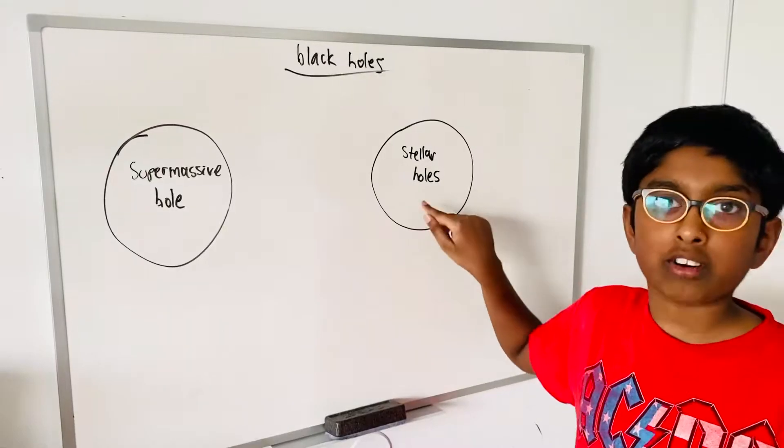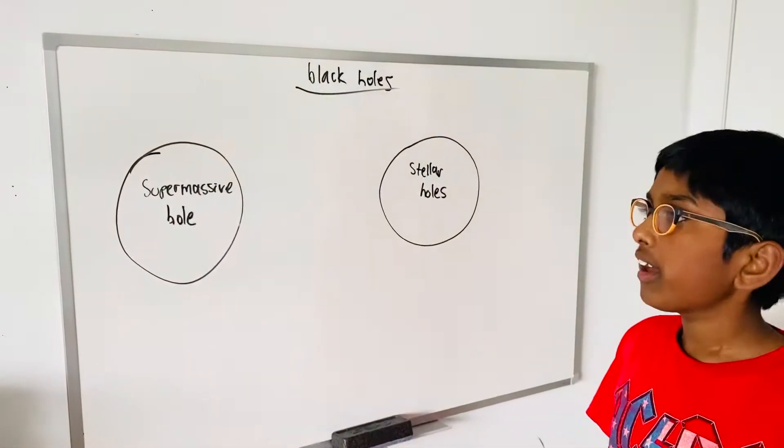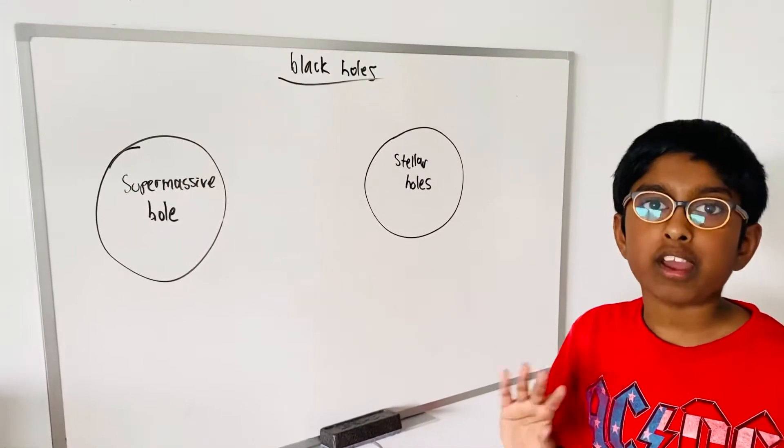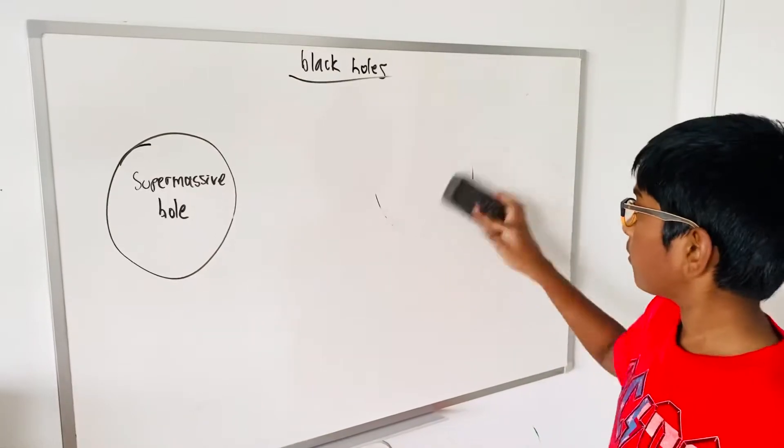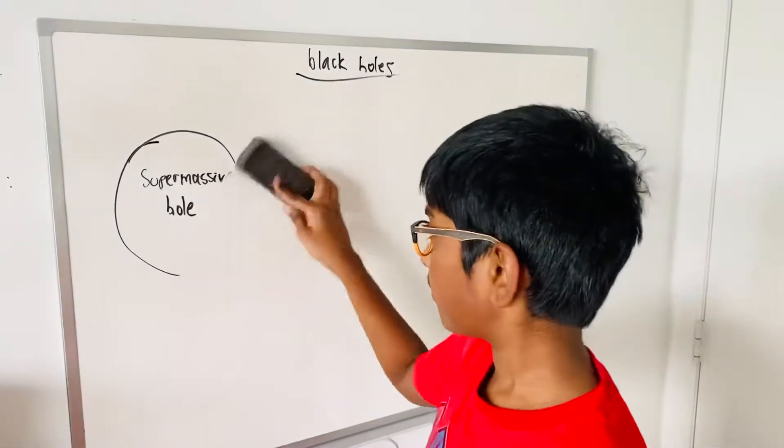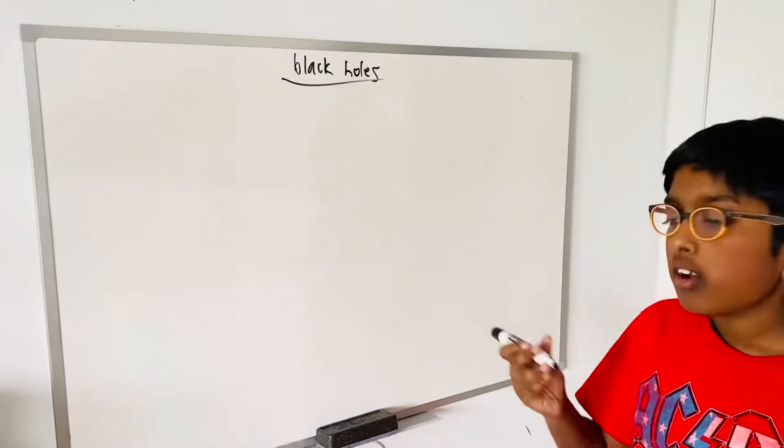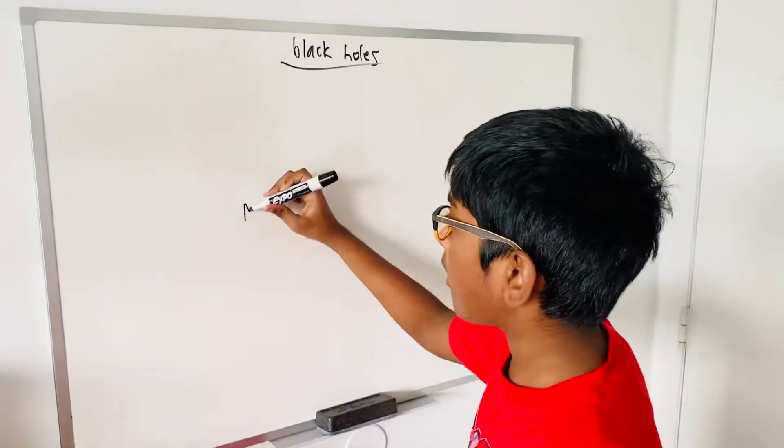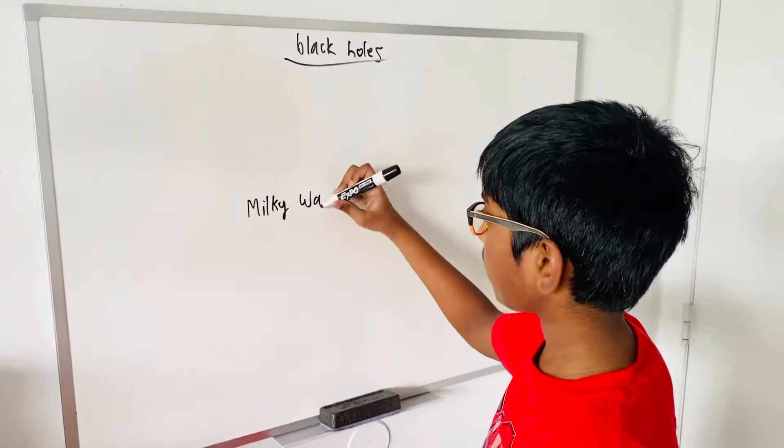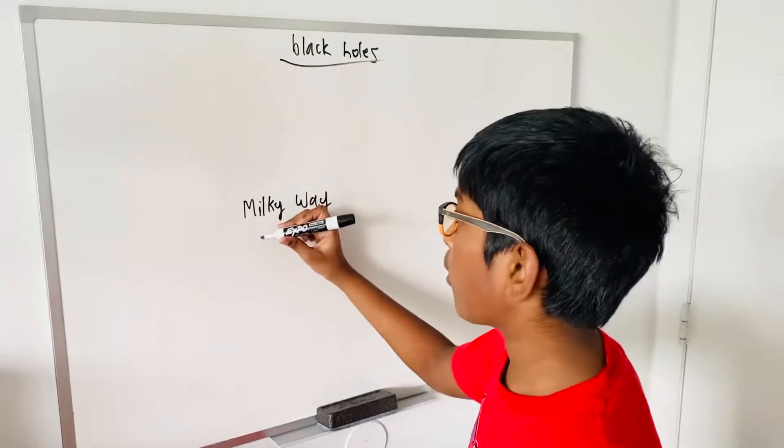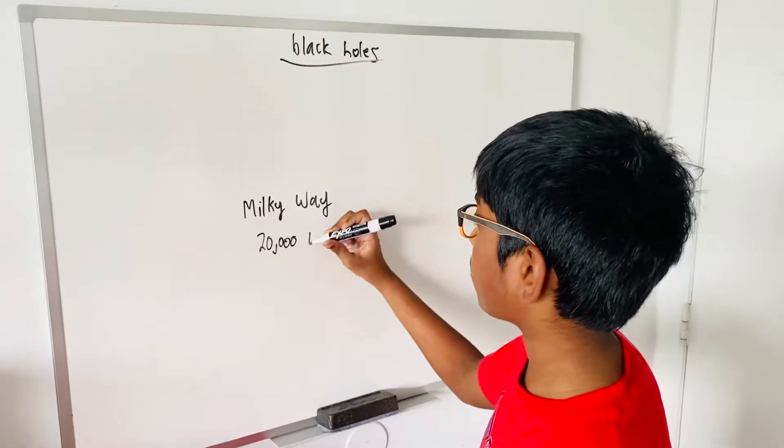Now let's talk about our nearest black holes and how many black holes there are in the Milky Way. In our own galaxy, the Milky Way, it is more than 20,000 light years across.